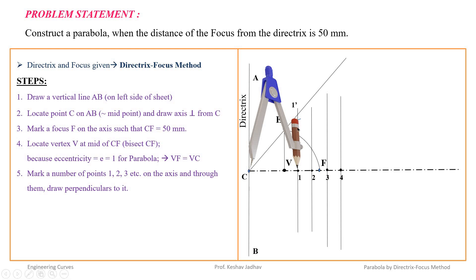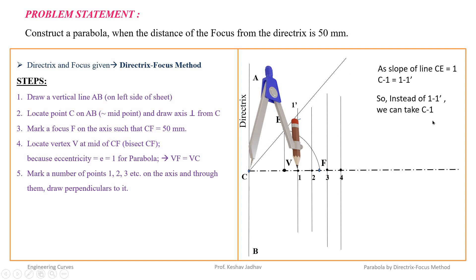So in a parabola, it is not required to locate point E or draw line CE. Instead of taking distance 11' in the compass, we can directly take distance C1, then C2, then C3, and so on. Because the slope of line CE equals 1, distance C1 equals distance 11', simplifying the construction.